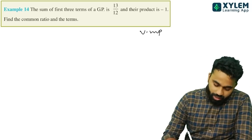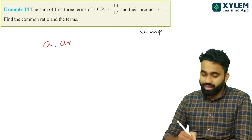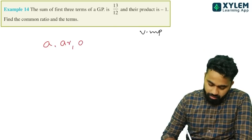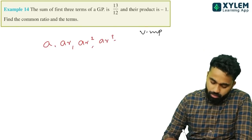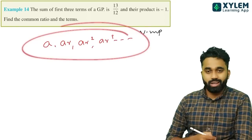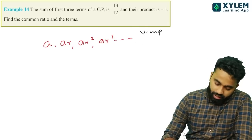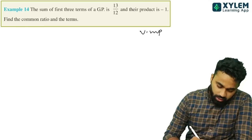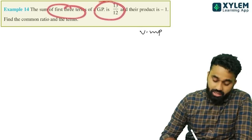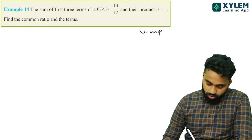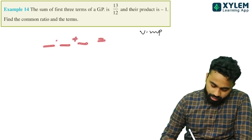Let's do one arithmetic sequence. The first three terms of a GP are a by r, a, and ar. The sum of the first three terms of the GP is 13 by 12.